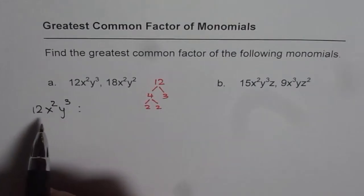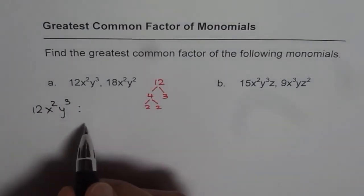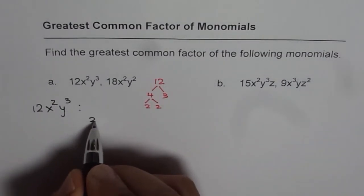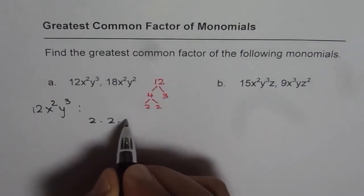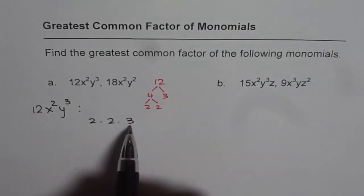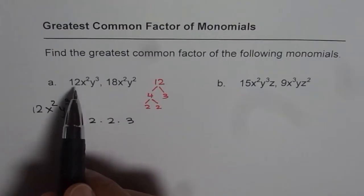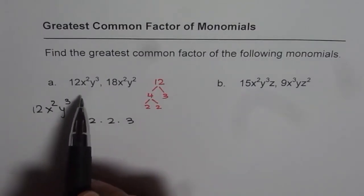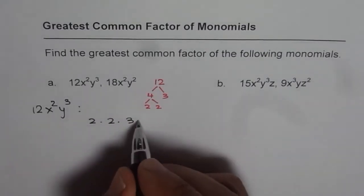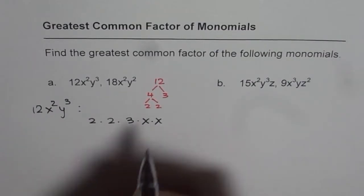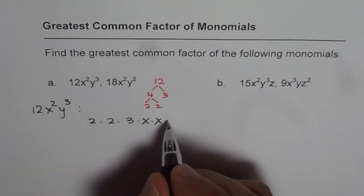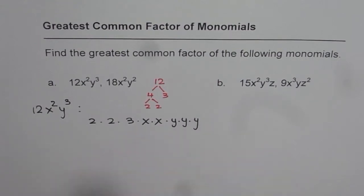So let me write down all the factors of 12x²y³. So we get 2 times 2 times 3. These are the prime factors of number 12, the coefficient of the first monomial. And then x² means x times x, y³ means y times y times y.